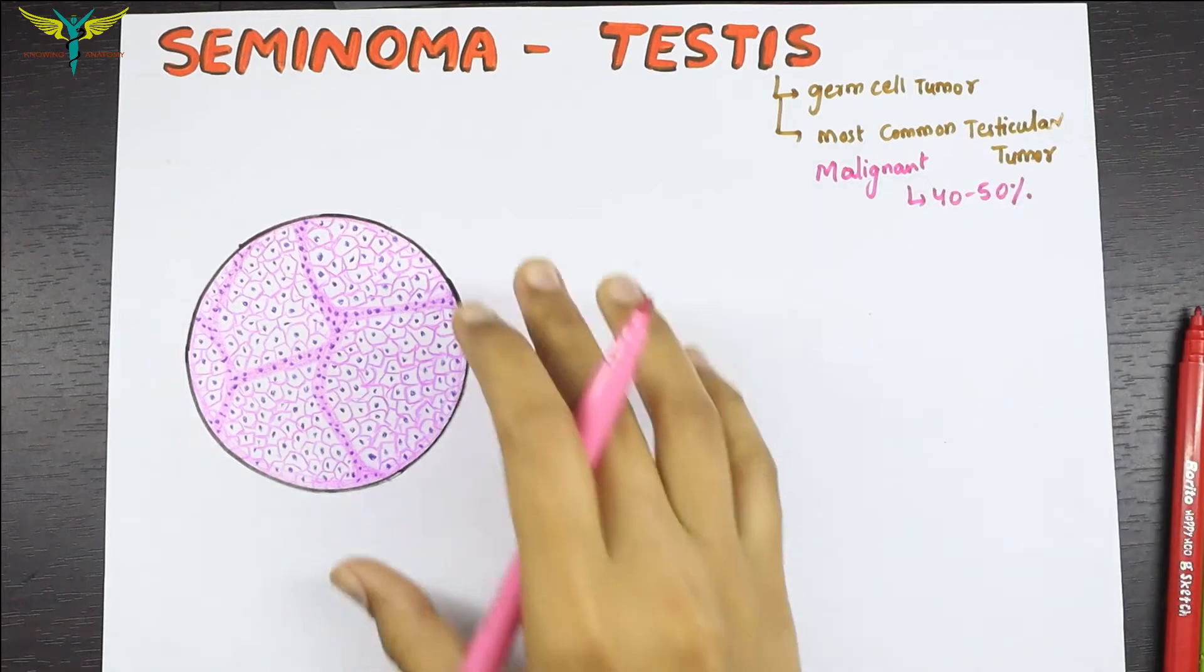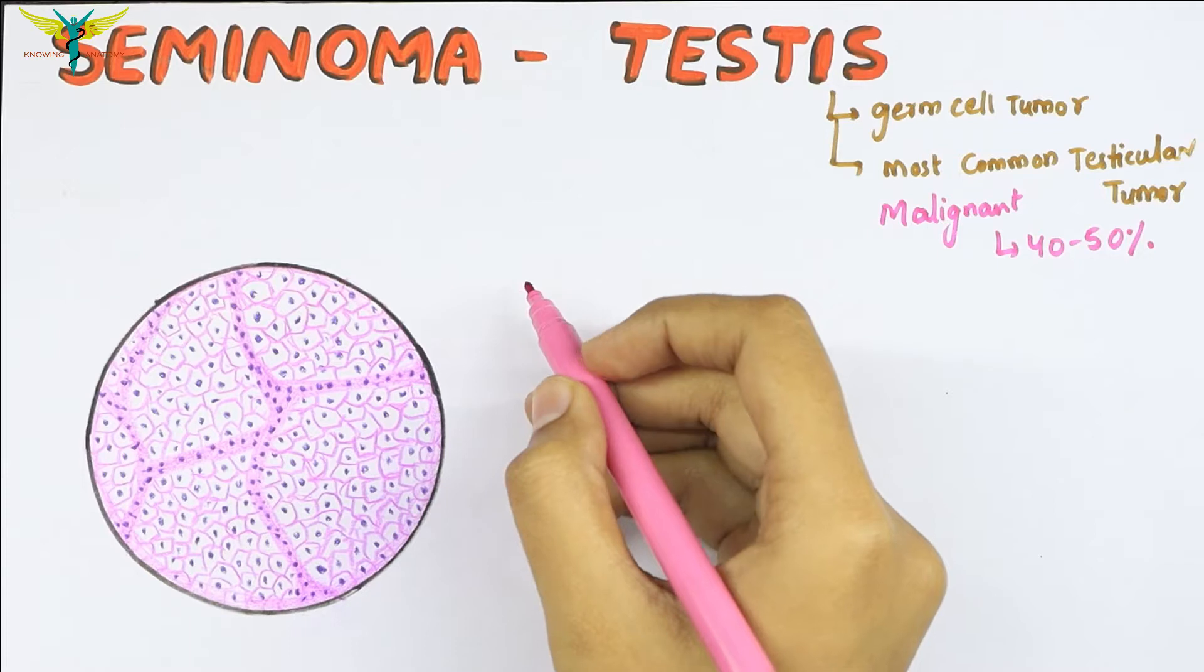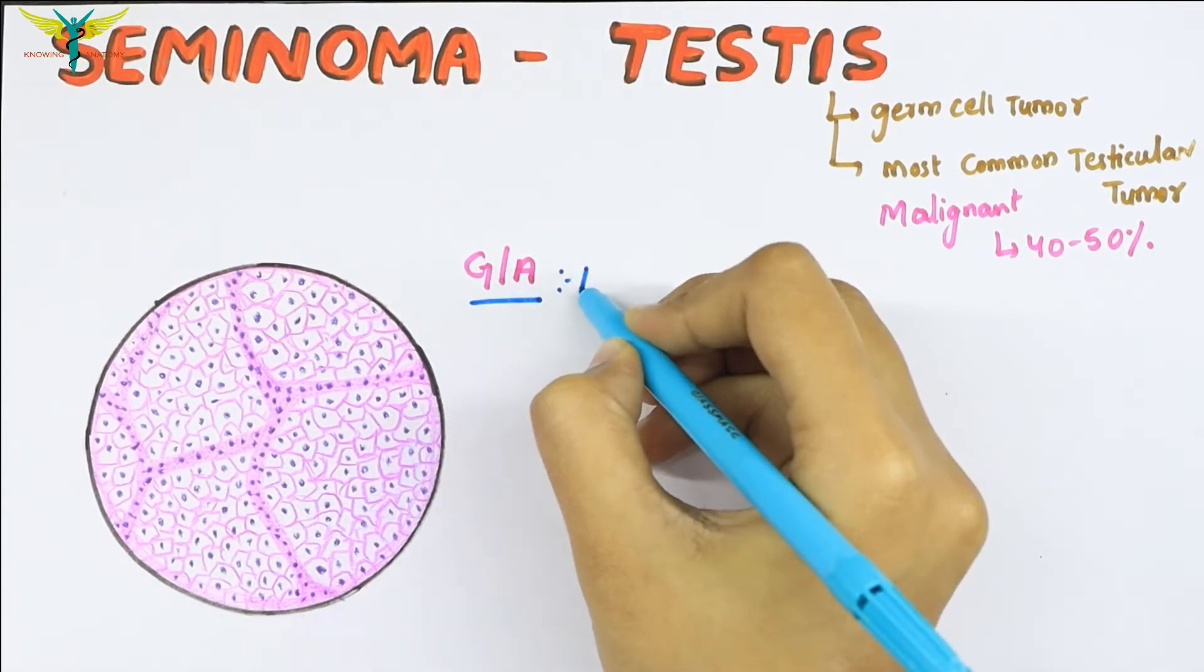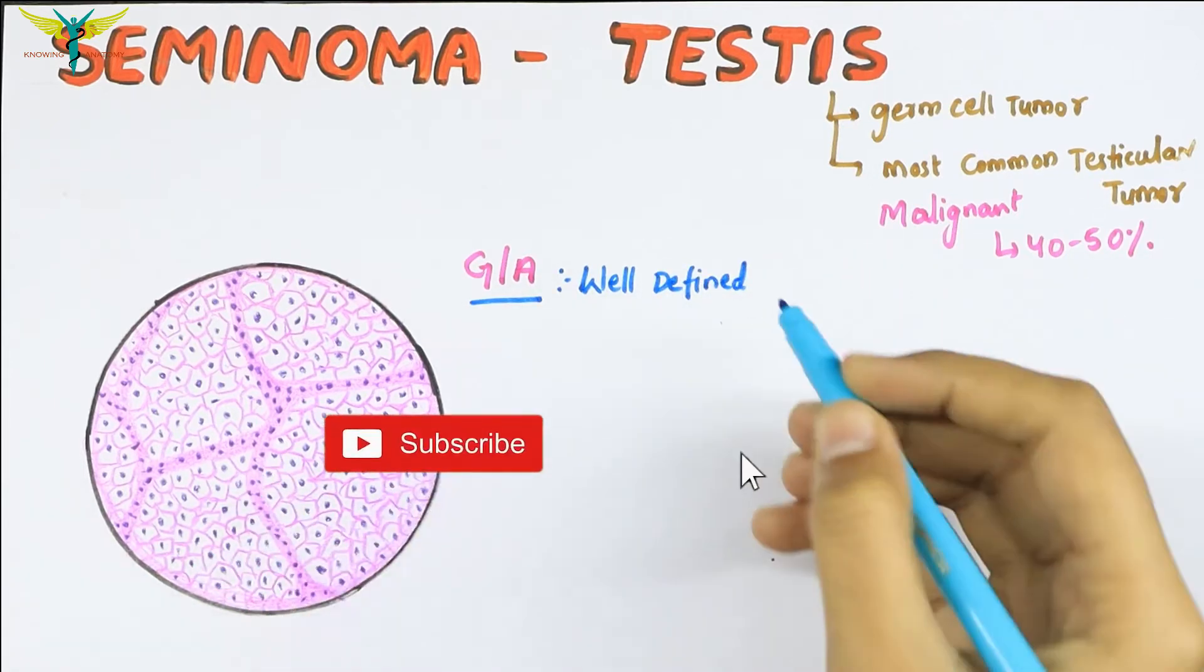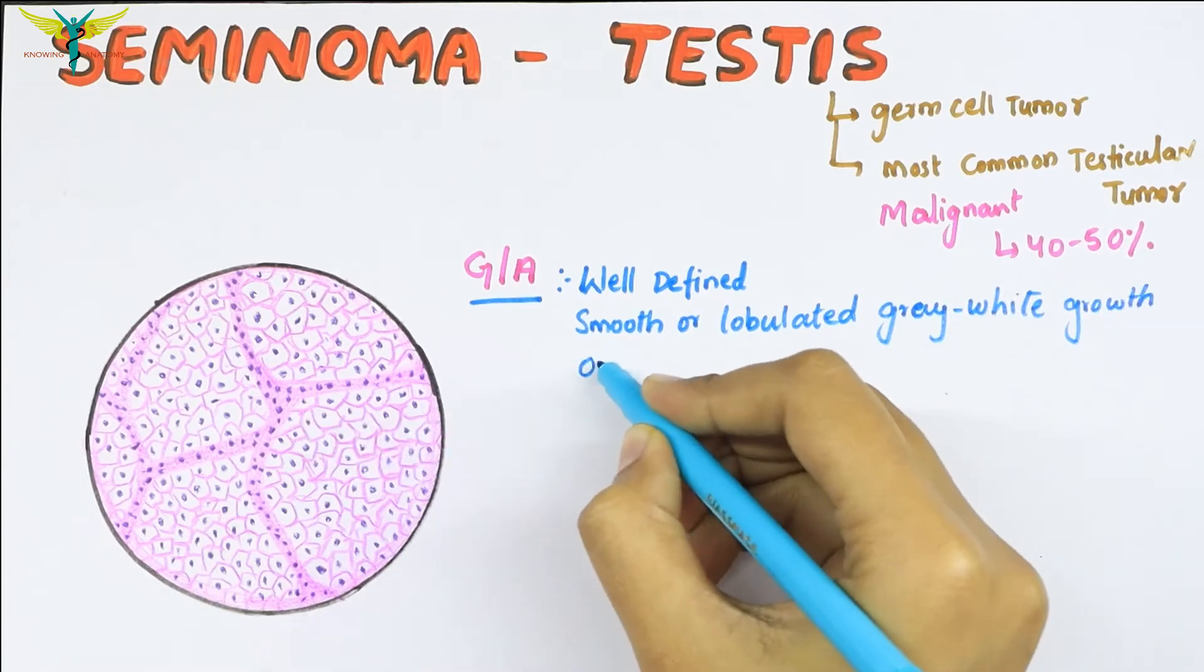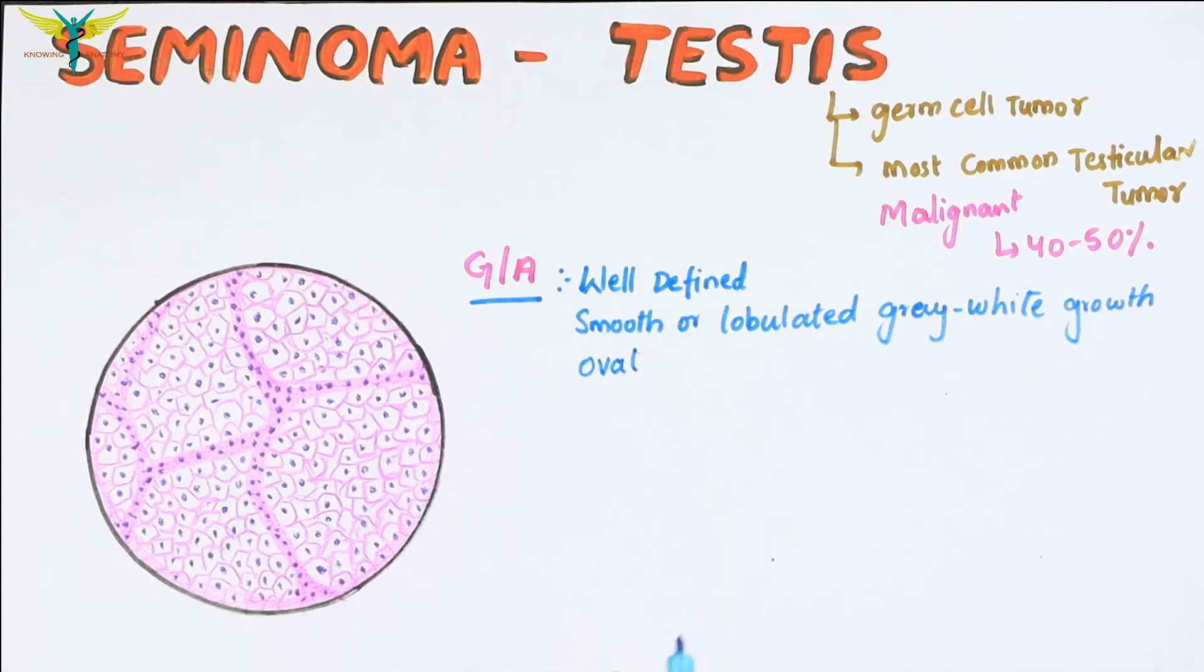Now let's learn about the histopathology of the seminoma. Coming to the gross appearance, the seminoma testis looks well defined with smooth or lobulated grey-white growth, oval in shape, and it replaces the whole testicular substance.